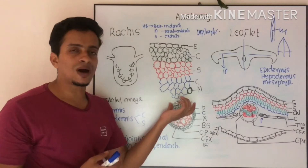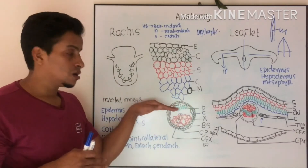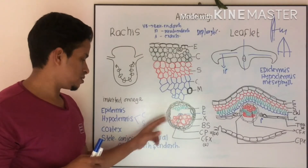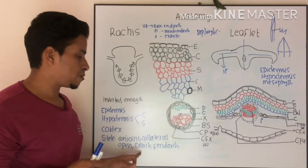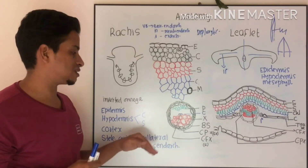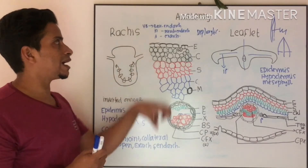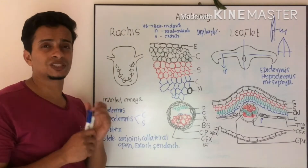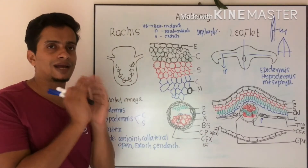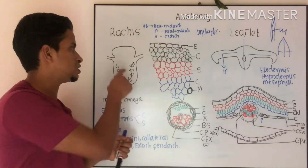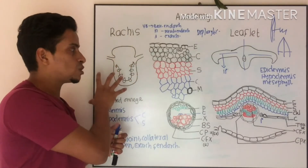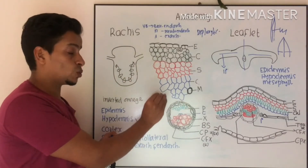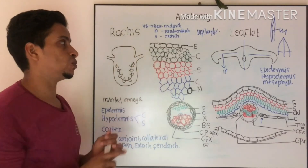So we can define the vascular bundle as conjoint, collateral, and open. Both xylem and phloem can be seen. Now we have the striking features of rachis anatomy: the presence of inverted omega-like vascular bundle arrangement, and the presence of centripetal and centrifugal xylem.